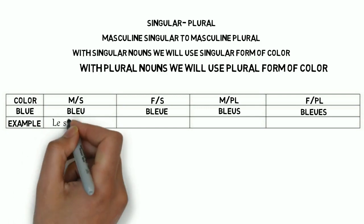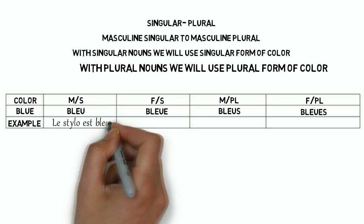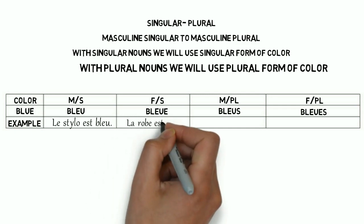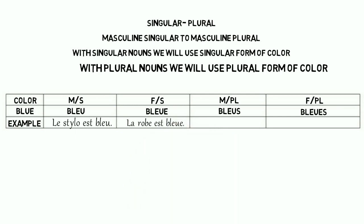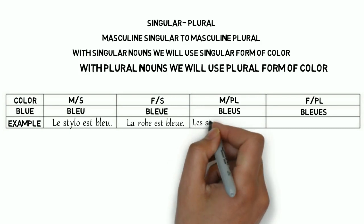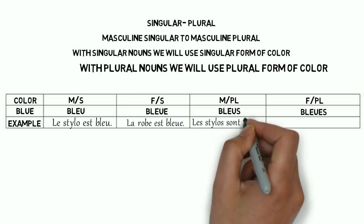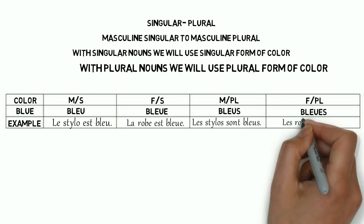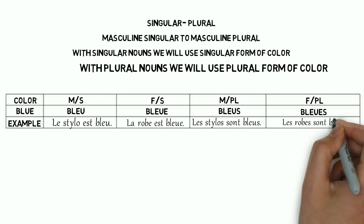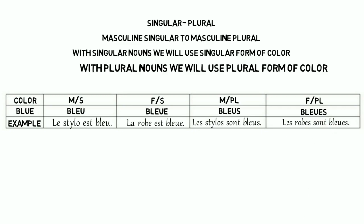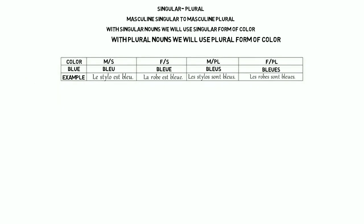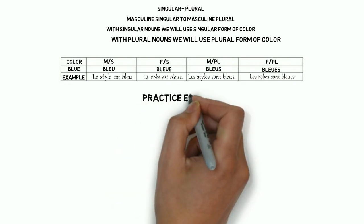Let's try sentences using these four forms. First, using masculine singular: L'stylo est bleu — l'stylo is masculine singular, so we use the masculine singular form of the color. Next, feminine singular: La robe est bleue — the dress is feminine in French, so the feminine form is used. Third, masculine plural: Les stylos sont bleus. And the fourth sentence is Les robes sont bleues, B-L-E-U-E-S, because les robes is a feminine plural noun, so we use the feminine plural form of the color.